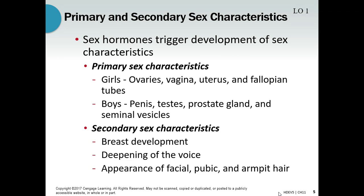Primary sex characteristics are those things directly related to sex and procreation. For girls, that includes the ovaries, vagina, uterus, and fallopian tubes. For boys, it includes the testes, penis, prostate glands, and seminal vesicles. All of these will enlarge and change during puberty, but of course we don't really get to see a lot of that.